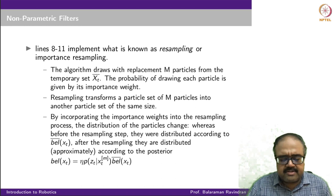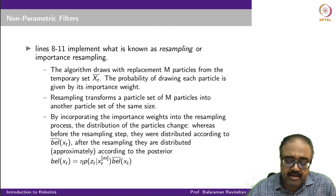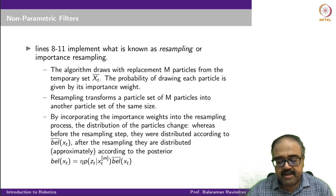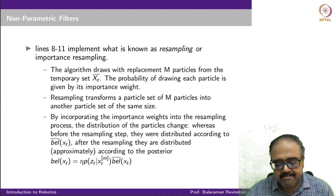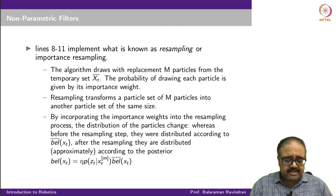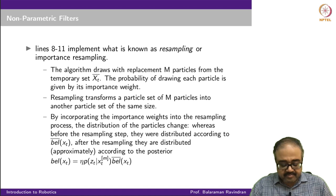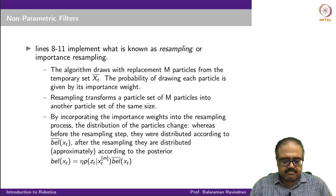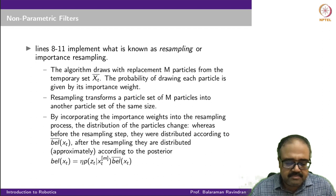Lines 8 to 11 implement what is known as resampling, or importance resampling. The algorithm draws M particles with replacement from script X_t bar. Script X_t bar is not really Bel_bar — the original particles sampled in line 4 give Bel_bar, while script X_t bar includes the weighted particles. Before resampling, particles are distributed according to Bel_bar(x_t); after resampling, they are distributed according to Bel(x_t).